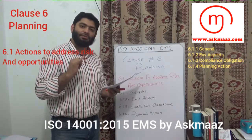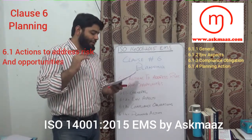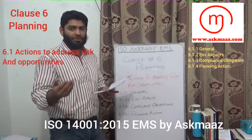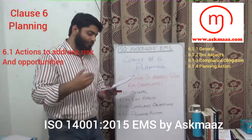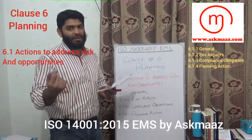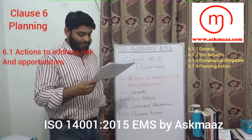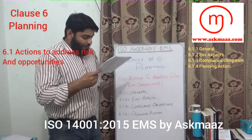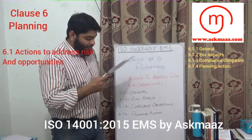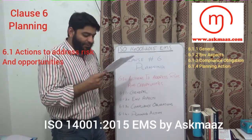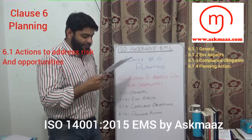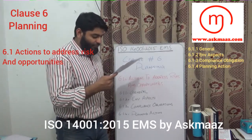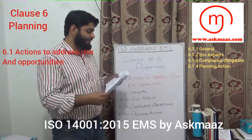First, internal and external issues — environmental issues. Second, requirements, compliance obligations, laws, regulations, and standards. And finally, the scope of the EMS. Together, you need to determine the risks and opportunities related to environmental aspects, compliance obligations, and other issues as identified in clauses 4.1 and 4.1.